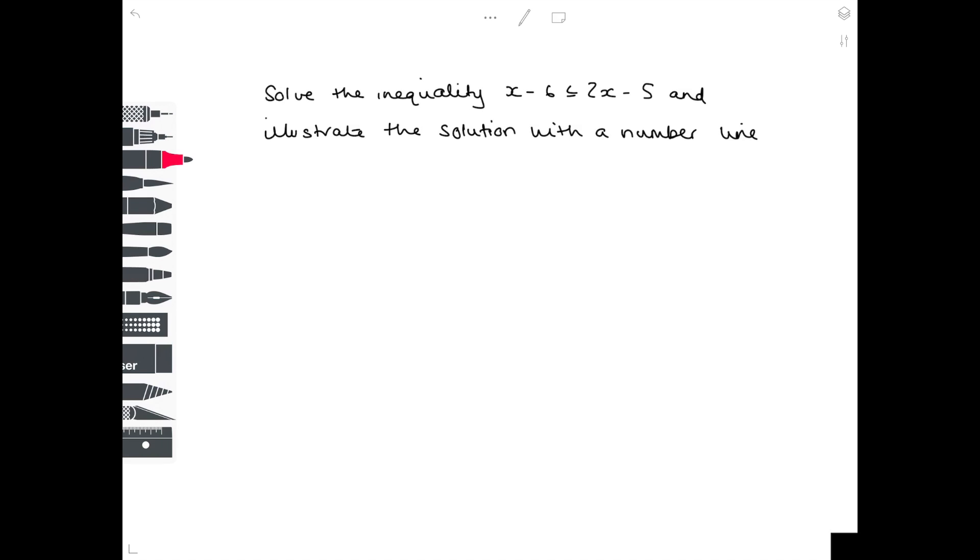In example 2, solve the inequality x minus 6 is less than or equal to 2x minus 5. And illustrate the solution with a number line. So starting with solving the inequality, slightly more difficult than our first example.